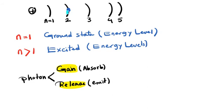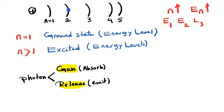If electrons gain or absorb energy, they can travel to higher energy levels. As n increases, energy for each shell increases. So if we have shell number 1, 2, 3 — energy E1, E2, E3 — by increasing n, energy for that specific shell increases. E3 is greater than E2, and E2 is greater than E1. Higher energy levels always means higher shell number.